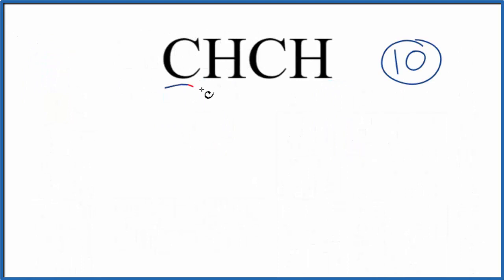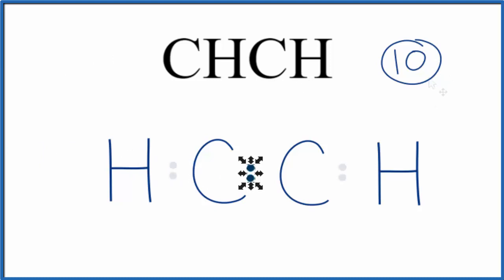So we'll put the carbon atoms at the center of our Lewis structure. The hydrogen atoms, they always go on the outside of Lewis structures. So we have 2 carbons, and then we have our 2 hydrogens. We have a total of 10 valence electrons for the CHCH Lewis structure. So we're going to put 2 between atoms. That'll form the chemical bonds. So far we've used 6 valence electrons.